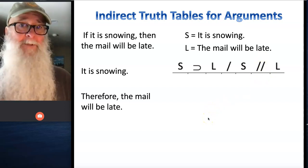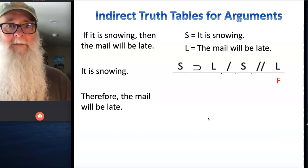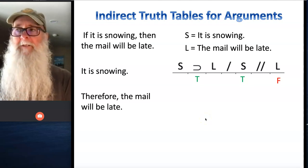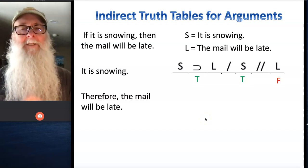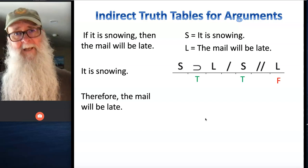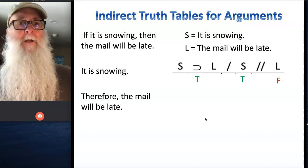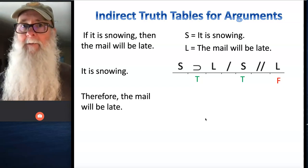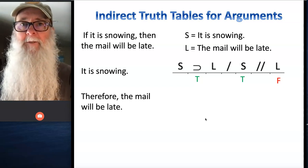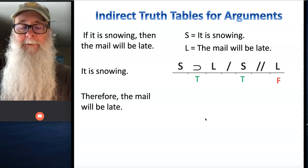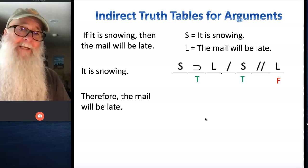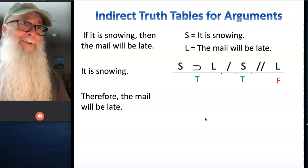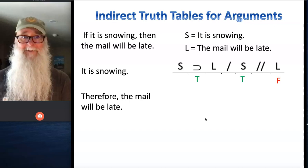Now, what we're going to do is we're just going to assume that conclusion statement is false and those premise statements are all true. And what we're going to see is if it's possible to deduce all the logically necessary truth values for the rest of the parts of this argument without running into contradiction. Because if we can do that, we will have demonstrated this argument's invalid. It's possible for the conclusion to be false even when the premises are true. But if we can't do that without running into contradiction, then we've proven the argument is valid because there's no way for the conclusion to be false when the premises are true.